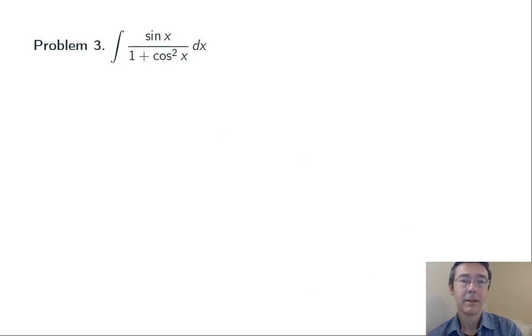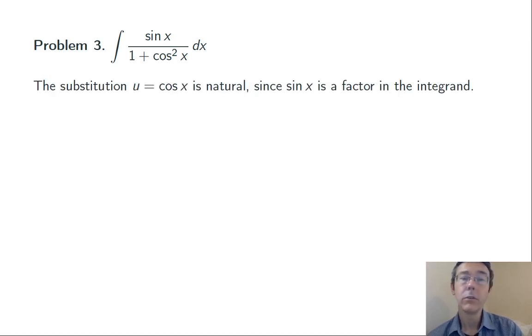Problem three. Integral of sine x over 1 plus cosine x squared. So here the substitution u equal cosine x is a very natural one because sine x is a factor in the integrand. That's one of the main things we look for when we choose our u substitutions.